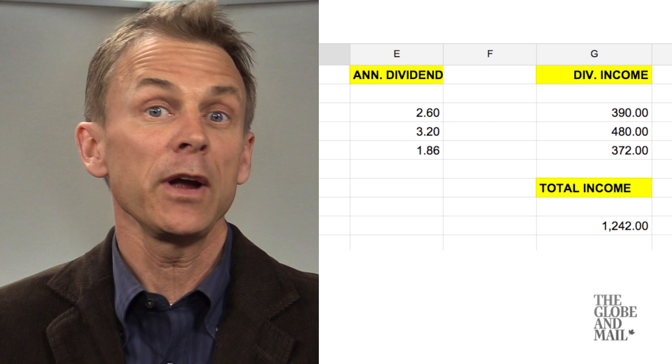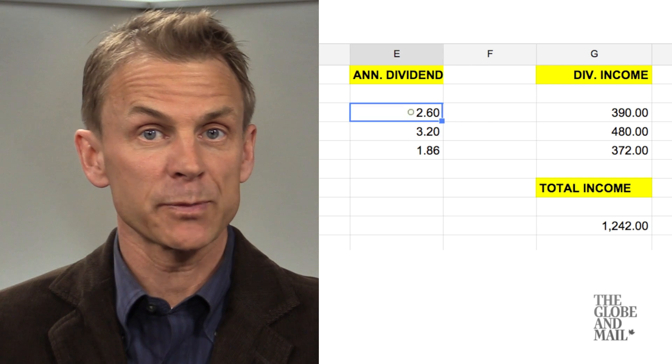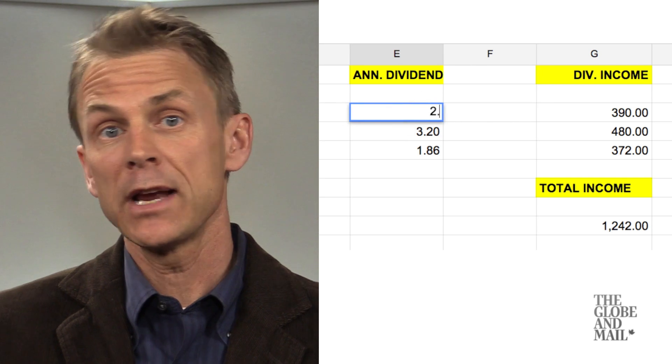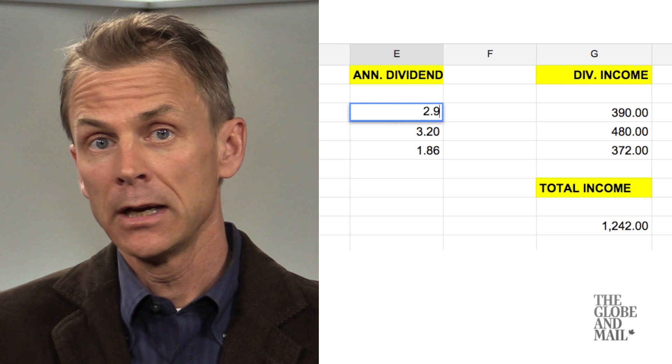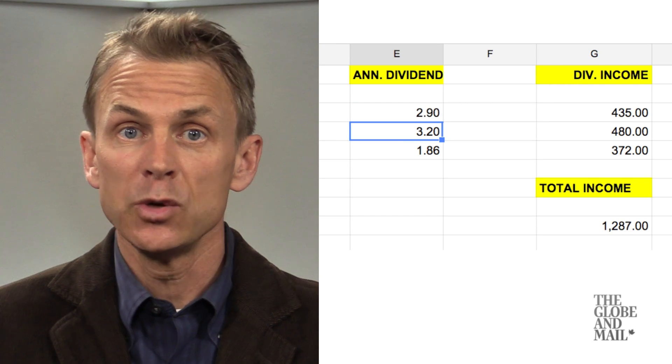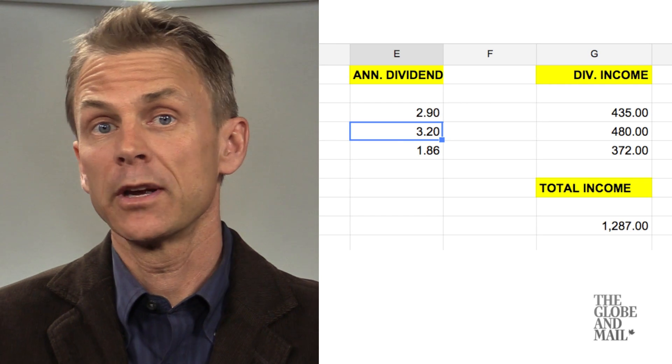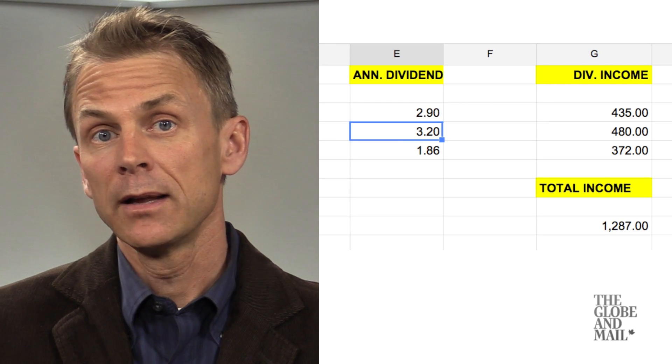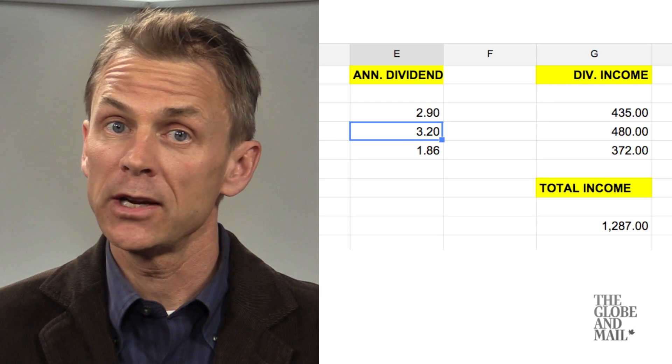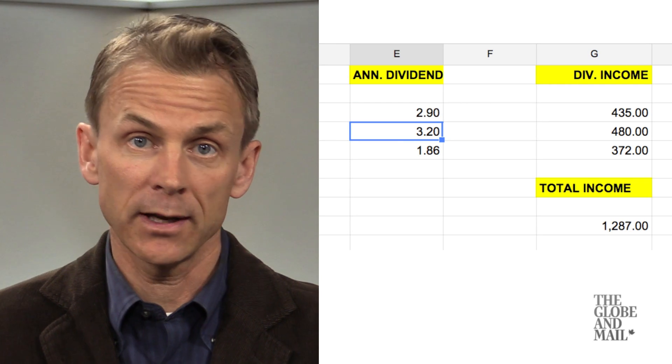The great thing about building a spreadsheet like this is if a company raises its dividend, you can just enter the new dividend value in the appropriate cell and it will update your income accordingly. It's the same if you buy extra shares of a company — just enter the new number of shares and it will also update your income.